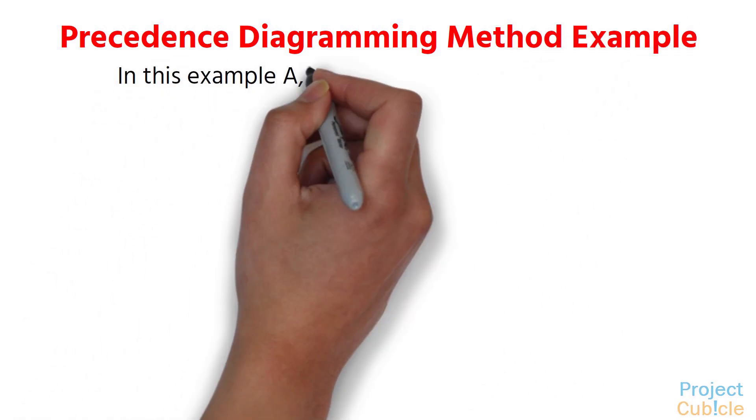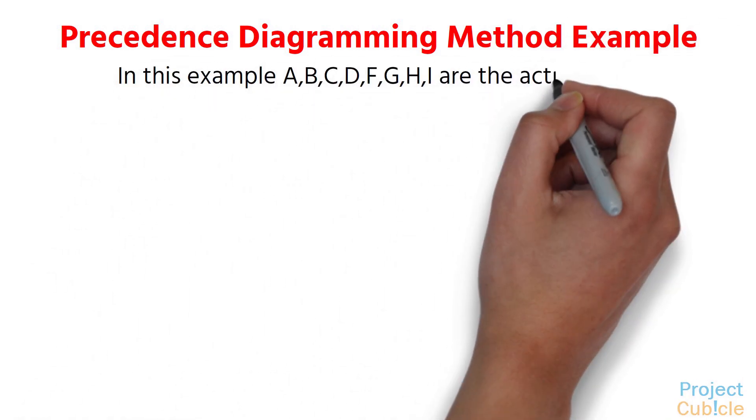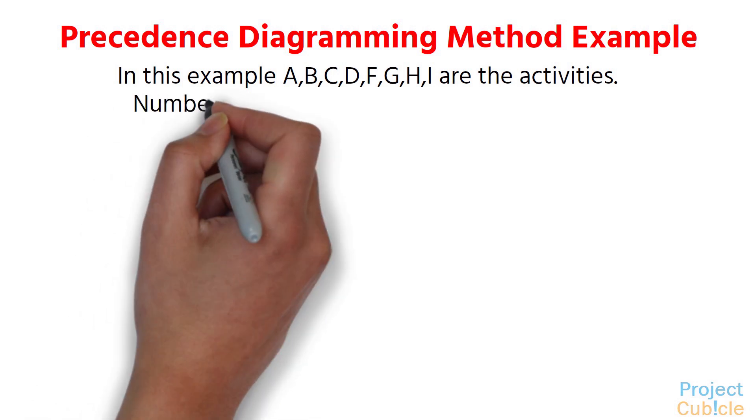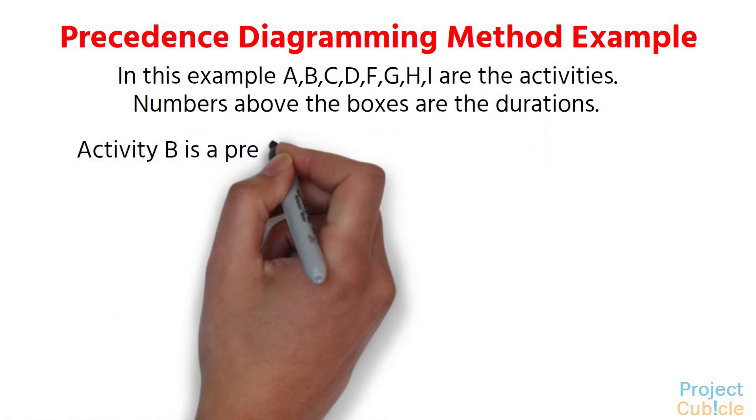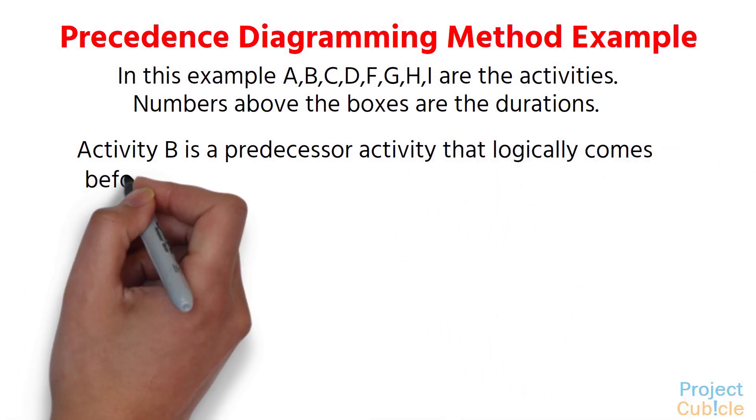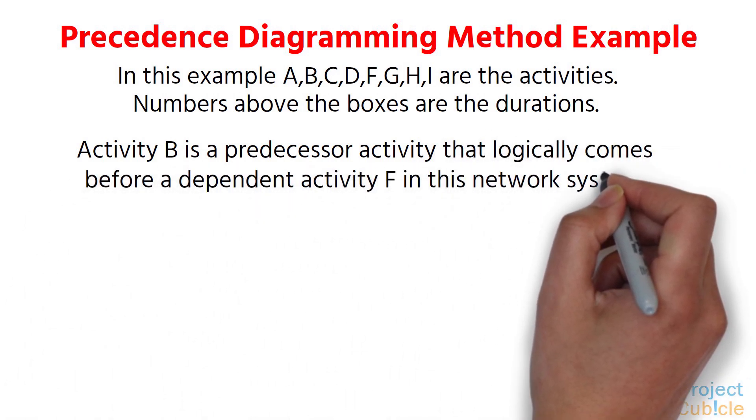In this example, A, B, C, D, F, G, E, H, I are the activities. Numbers above the boxes are the durations. Activity B is a predecessor activity that logically comes before a dependent activity F in this network system.